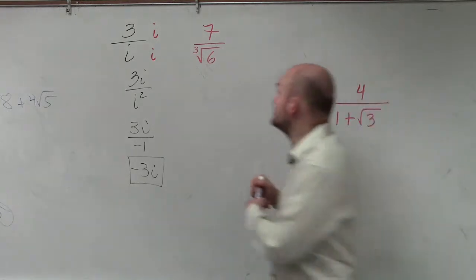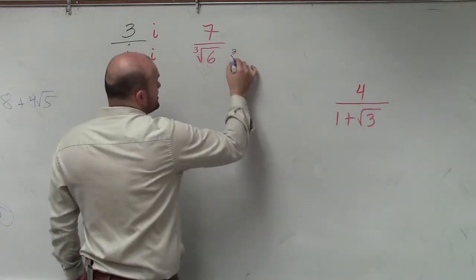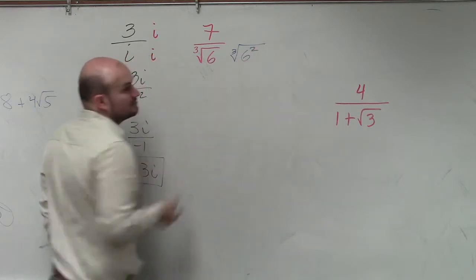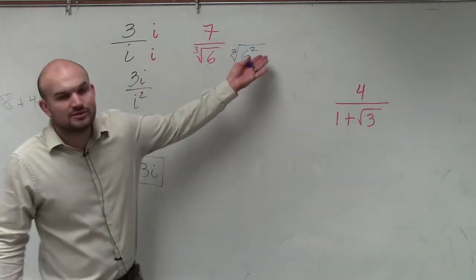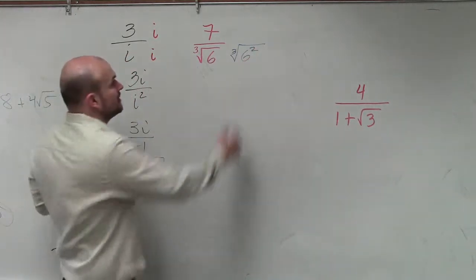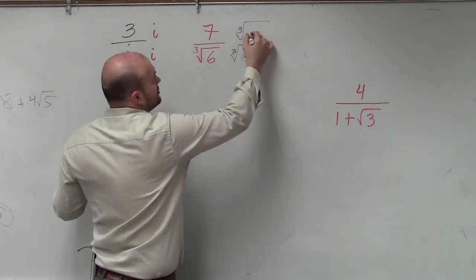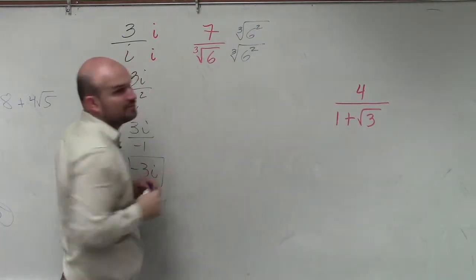So what I'm going to do is I'm going to multiply by the cube root of 6 squared. Or you could think about 6 squared as 6 times 6, whatever way you want to think about it. Then whatever you do on the denominator, you have to do in the numerator.